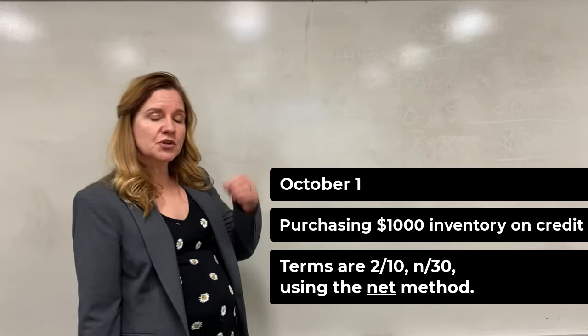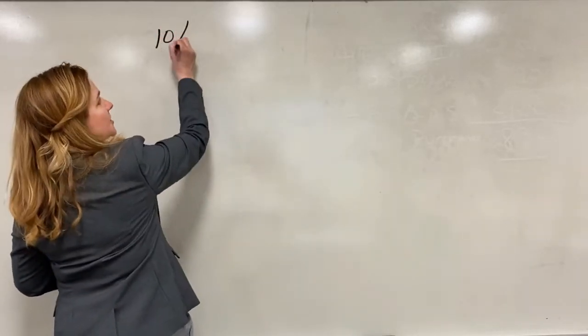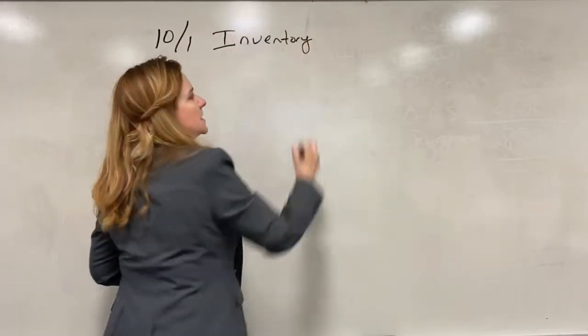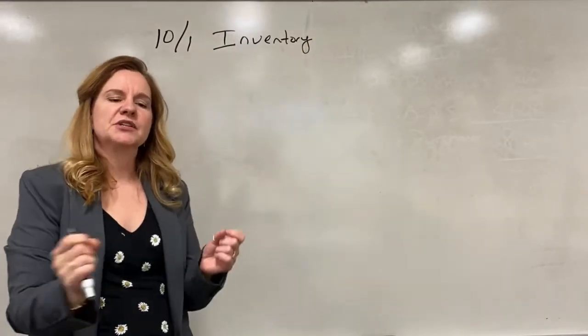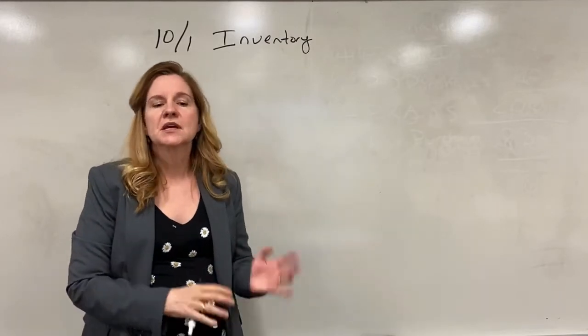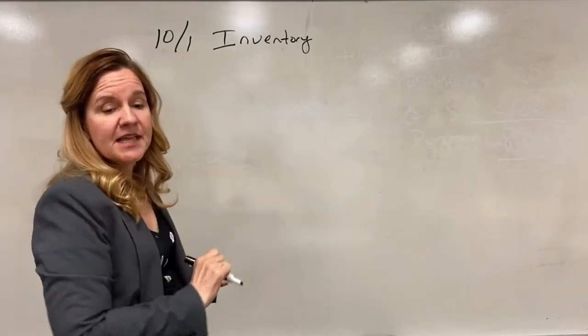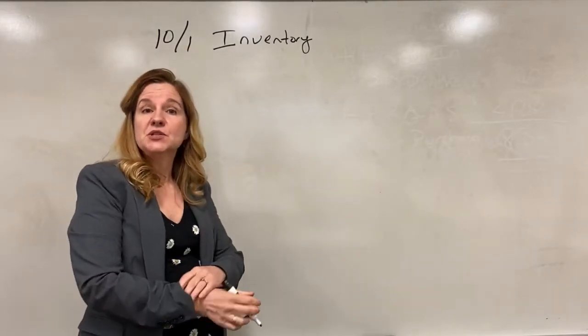So the journal entry will be to debit inventory on October 1st but under the net method we're going to assume we are taking the discount so we're going to record it with the discount immediately. So the discount on the thousand dollars is going to be twenty dollars.